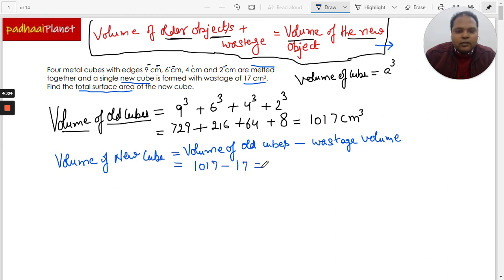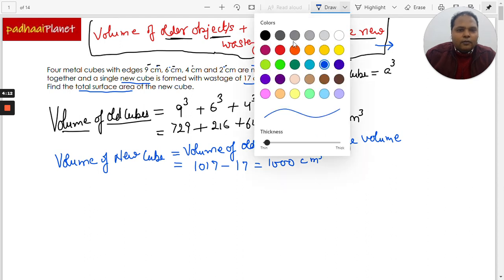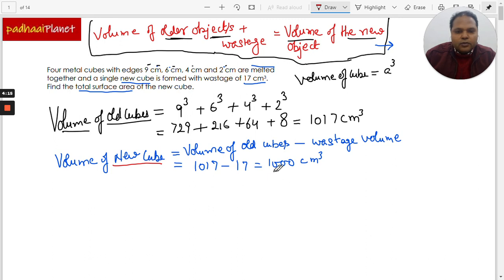And that's equal to 1000 cubic centimeters. And now that we have got the volume of the new cube, which is 1000 cubic centimeters, we can find the edge of the new cube.